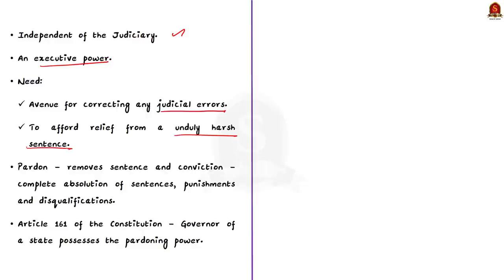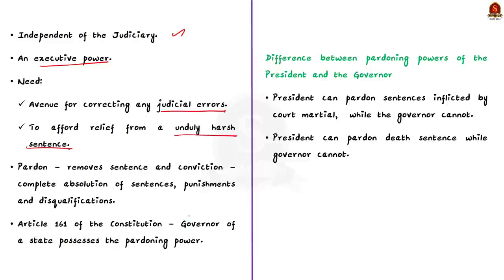As per Article 72, the President has pardoning powers including pardons, reprives, respites, remissions, suspending sentence, remitting sentence or commuting sentence. When pardon is given, it removes both the sentence and the conviction and completely absolves the convict from all sentences, punishments and disqualifications. Under Article 161, pardoning powers are also vested in the Governor. The Governor can grant pardons, reprives, respites and remissions and also has the power to suspend, remit or commute a sentence — but only when a person is convicted of an offense against a state law.